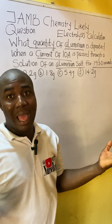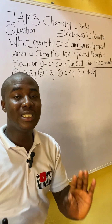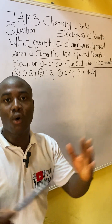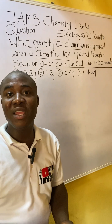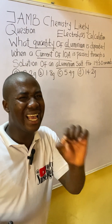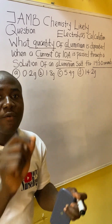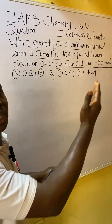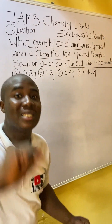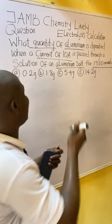They said 'what quantity?' Quantity can mean different things — it can mean mass, concentration, or volume, as the case may be. To know exactly what we are looking for, we look at the options. If you observe, all the values in the options are expressed in grams, which means they are asking us to find mass in this question.